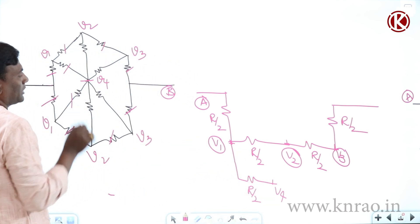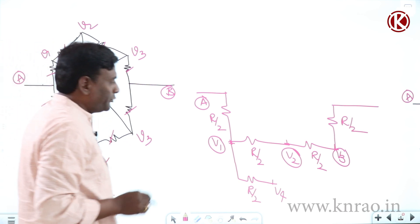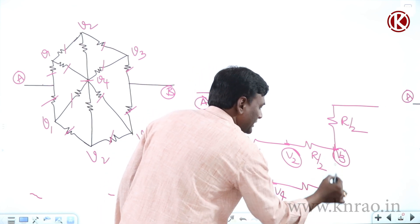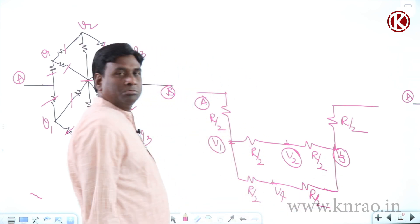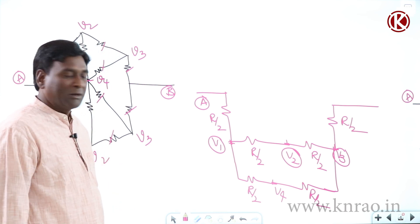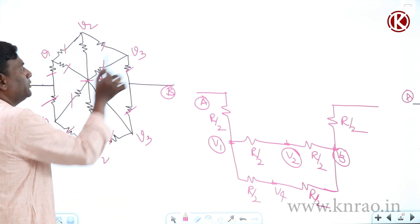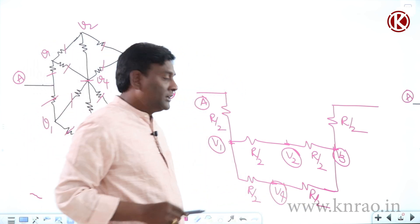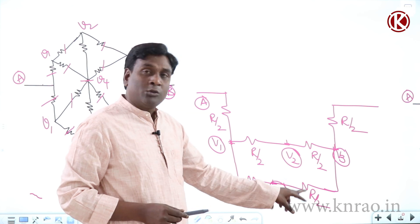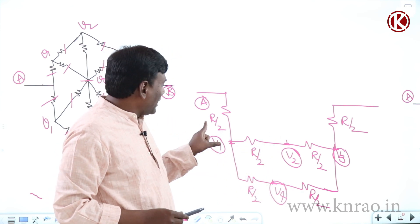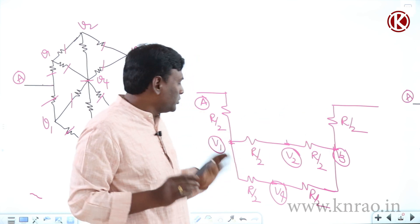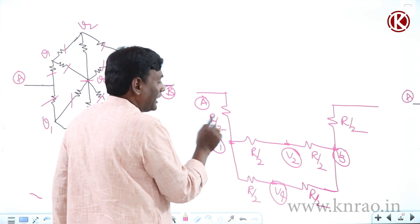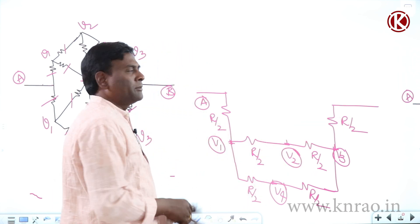Now V3 to B: two R resistors connected in parallel, giving R/2. Also, V1 to V4: three R resistors — two of them in parallel give R/2. And V3 to V4 is also R/2. So the circuit reduces to R/2, R/2, R. Two R values in parallel give R/2. So R/2 + R/2 + R/2 = 3R/2 is the answer.